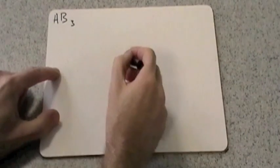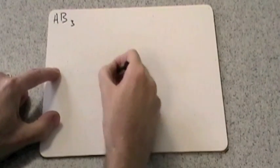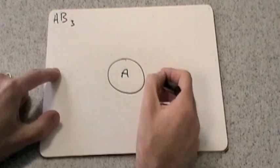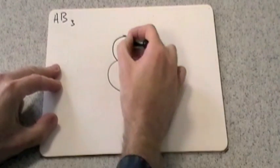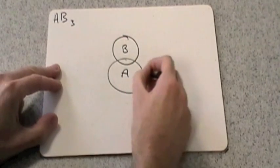We'll move on to three pairs of electrons now in the valence shell, so I'm going to just make up the molecule AB3. So we've got a central A atom, and I'm going to put three bonded atoms to that.